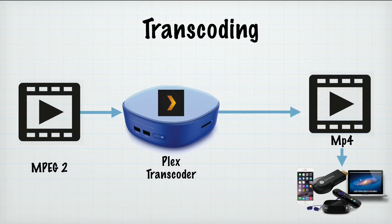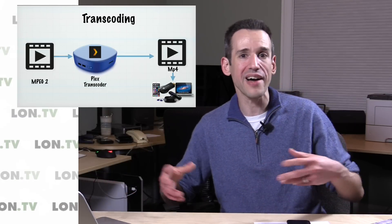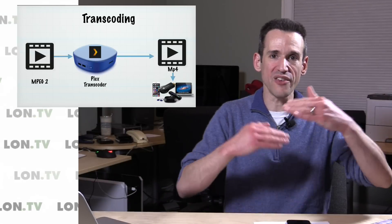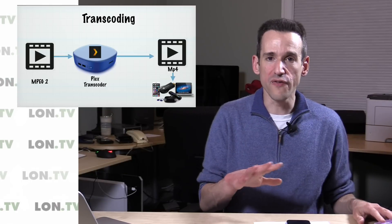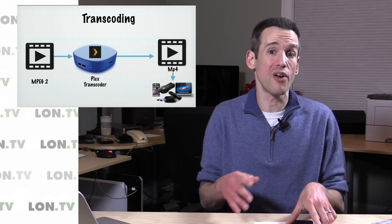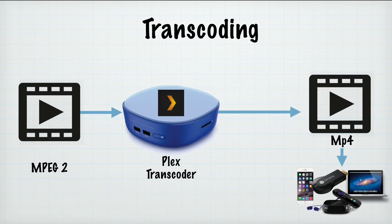Another thing Plex can do is format conversion on the fly. My HD HomeRun DVR records onto the computer in MPEG-2 formatted video, which is not really compatible with most things I'd play it back on — including a web browser, Roku box, and others. So the Plex server will not only make the file smaller but also convert it from MPEG-2 to MPEG-4, which is what all these devices use. It does that automatically on the fly — it just knows what it needs to do to get your files to work.